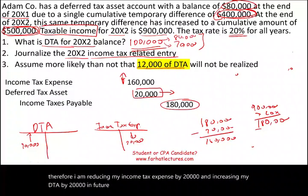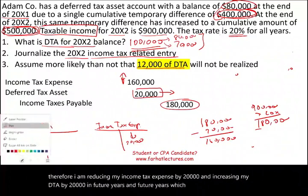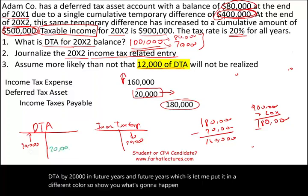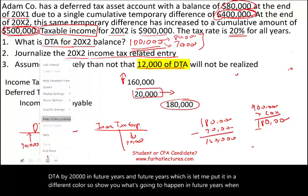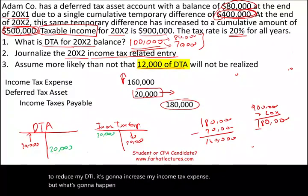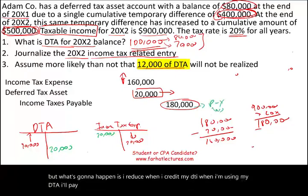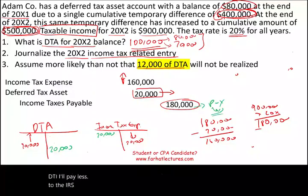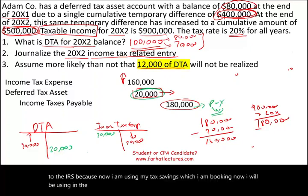In future years, when you start to reduce the DTA — crediting the deferred tax asset — it's going to increase your income tax expense. However, what will happen is you'll pay less to the IRS because you'll be using the tax savings that you booked now. Those savings booked now will be used in the future.